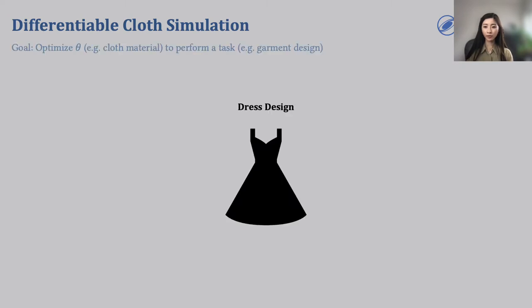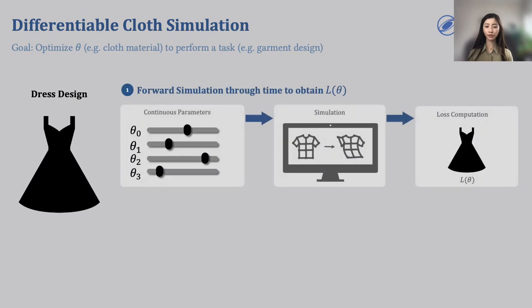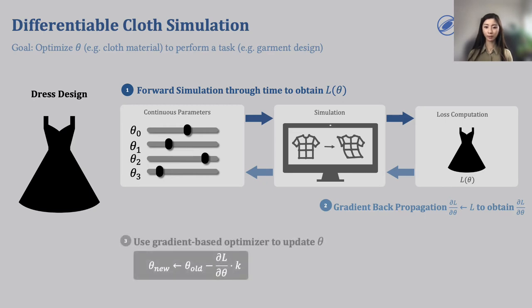This is where differentiable simulation can come into play. Imagine you need to perform a task, say, tweaking the material settings of a dress so that the dress spins like a ballerina dress. With differentiable simulation, we can first simulate the cloth through time with an initial parameter set, then measure how far we are from our goal using a loss function defined on the parameter. Because the computation process is differentiable, we can then reverse the computation order and derive the gradient of the loss with respect to the parameter. The gradient information allows us to then use gradient-based optimization methods to update the parameter. We can iterate this process until we find the parameters that minimize the loss and achieve our design goal.